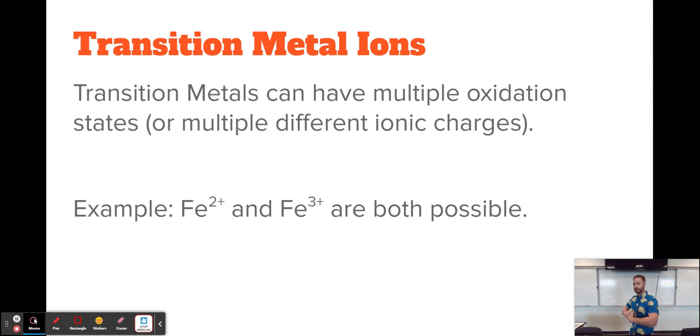And that makes it harder to predict what iron is going to be because it can be either of those things. So it means that if we want to convey information about iron in a compound, we have to say what the charge is going to be. And if we want to figure out what the charge of iron is in a compound, we have to be aware that it can be multiple different things.